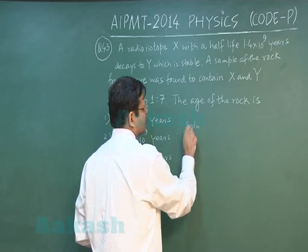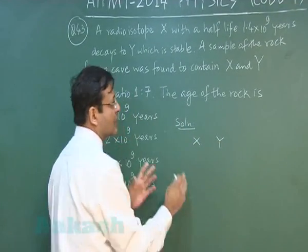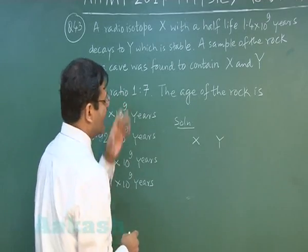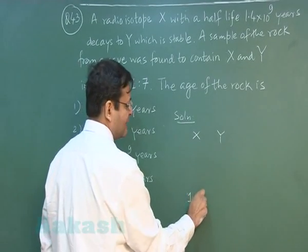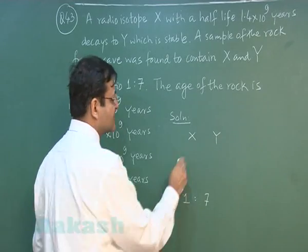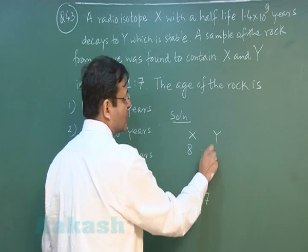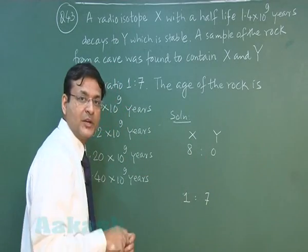Now you see in this question the ratio X and Y, the value right now has been given to be 1 is to 7. Now see whatever is Y, this is stable. If you add both of them this was the situation, if you add both of them this is 8. 8 is to 0 ratio was in the beginning, you understand.